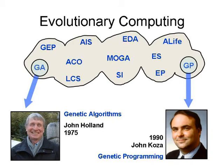Genetic algorithms were introduced in a groundbreaking book in 1975 called 'Adaptation in Natural and Artificial Systems' by Holland, who is at the University of Michigan. The other type of algorithm we're going to look at is GP — genetic programming — from John Koza, who is an entrepreneur and researcher at Stanford.